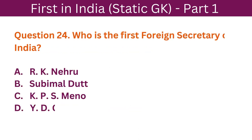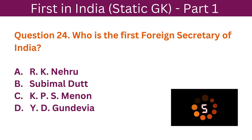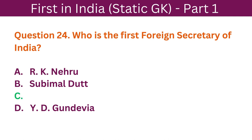Question 24: Who is the first Foreign Secretary of India? A. R.K. Nehru. B. Subimal Dutt. C. K.P.S. Menon. D. Y.D. Gundevia. The correct answer is C. K.P.S. Menon.